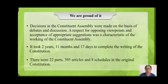Decisions in the Constituent Assembly were made on the basis of debate and discussions. A respect for opposing viewpoints and acceptance of appropriate suggestions was a characteristic of the working of the Constituent Assembly. It took 2 years, 11 months and 17 days to complete the writing of the constitution. There were 22 parts, 395 articles and 8 schedules in the original constitution.